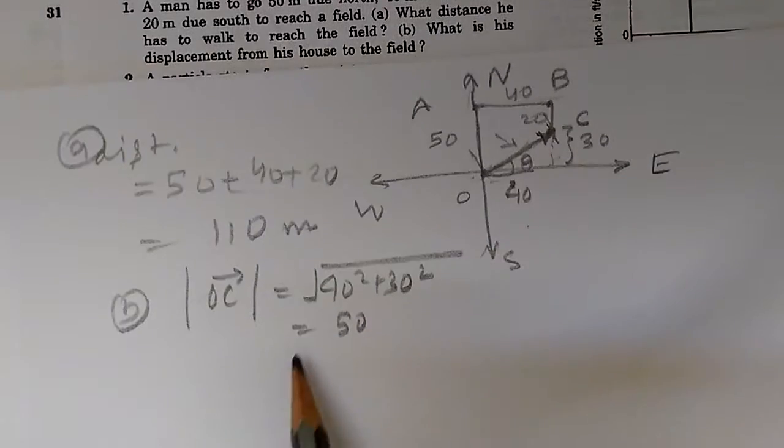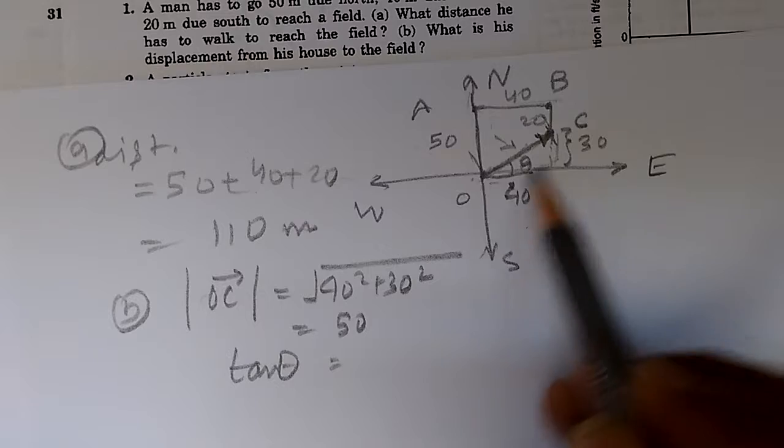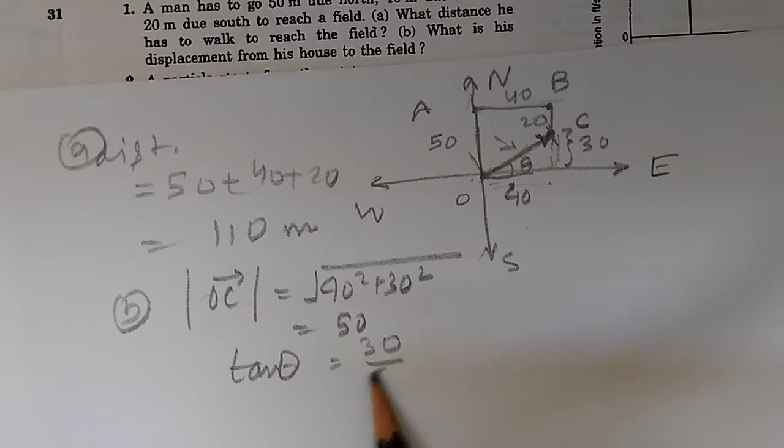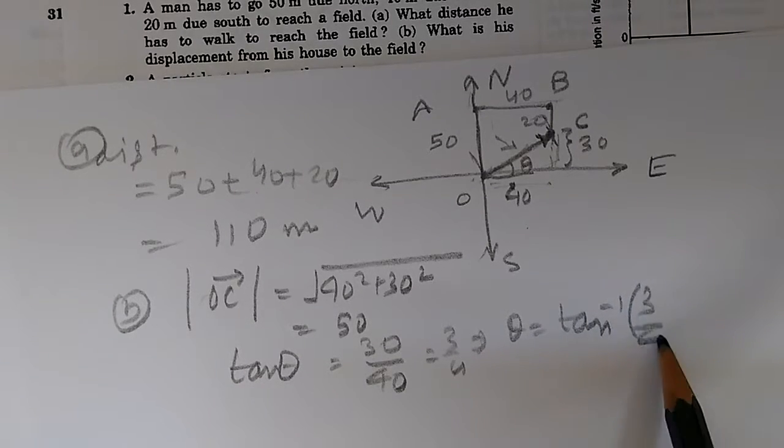If the direction is theta, then the angle tan theta will be given by this length divided by this length, or 30 by 40, or 3 by 4. This means that theta is equal to tan inverse of 3 by 4.